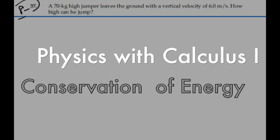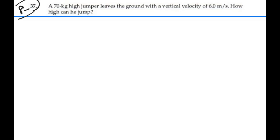Here's problem 837. A 70 kilogram high jumper leaves the ground with a vertical velocity of 6 meters per second. How high can he jump?